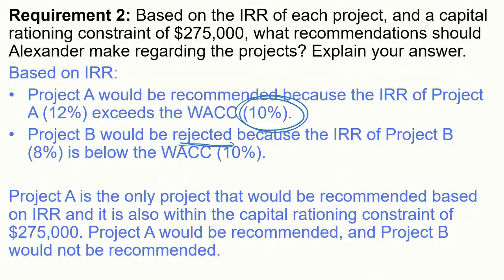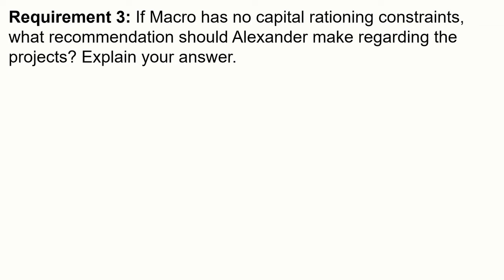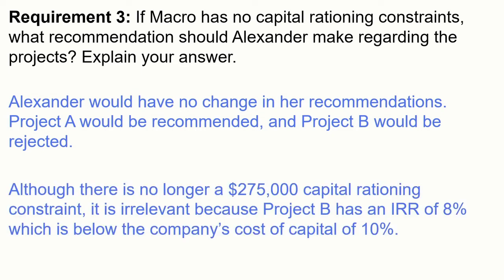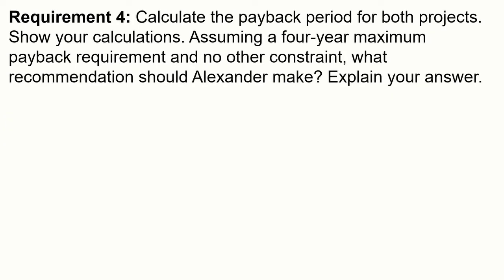Requirement three: if Macro has no capital rationing constraints, what recommendation should Alexander make? There is no change. Project A would still be recommended and Project B would still be rejected. Although the $275,000 capital rationing constraint no longer applies, it is irrelevant because Project B has an IRR of 8%, which is below the company's cost of capital. Even if the money is available, we would not invest in Project B.